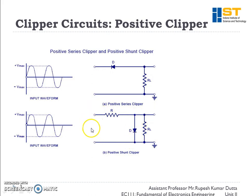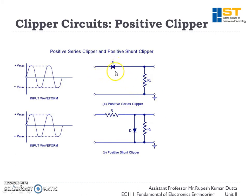In the positive series clipper, when we apply a positive half cycle the diode becomes reverse biased. In series circuits, when the diode is forward biased it acts as a short and allows all signals to pass to the load. When the diode is reverse biased in a series circuit, it is open and no signal passes to the load.